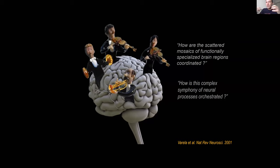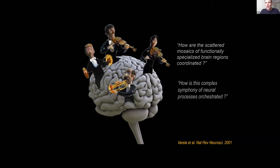These highly specialized brain areas don't operate independently. For us to have coherent behavior — moving in the environment, making decisions, interacting with others — there needs to be interaction and exchange of information between brain areas. One is specialized in vision, another in motor, another in memory, but they need to interact. Everything we'll discuss now is how this actually happens from an electrophysiological perspective, and how we try to measure these interactions.